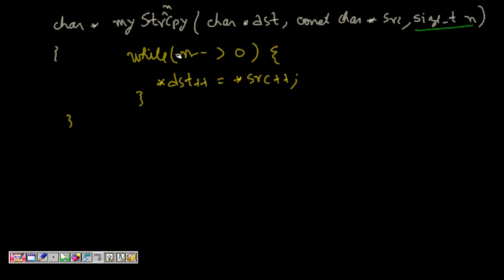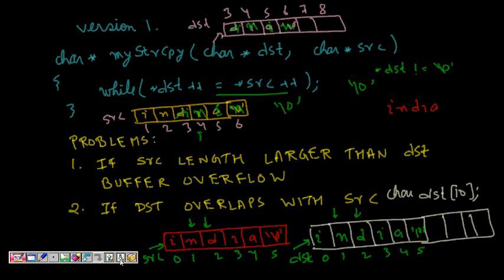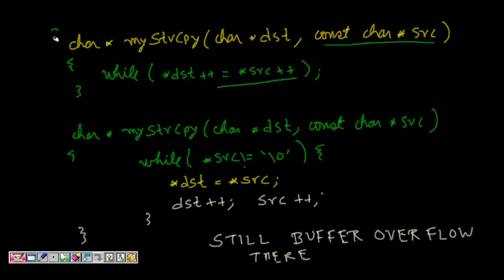To address this, we use strncpy, where we also provide a size for the destination buffer. We do: while (n-- > 0), *destination = *source++. This way you check all the boundary conditions. This is the most general way of writing a string copy function. I hope you understand this implementation of string copy and its associated problems. If you like it, please subscribe to my YouTube channel and share it with your friends.